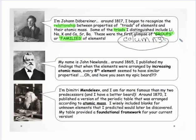The next scientist is Newlands. He came up with an arrangement of elements according to atomic mass and noticed a cyclical property — that every eighth element seemed to repeat upon itself. He's got quite a distinctive beard, too. You want to see how the progression emerged as each scientist thought through it and made his or her contribution.